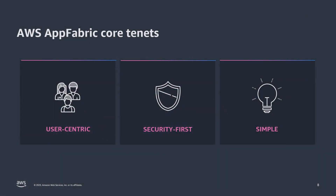Enriching that context with customer data is going to be really important. So let's talk about how we protect customer data privacy when we do that within these applications. How do we take data flowing from SaaS apps into AppFabric and then to the AppFabric AI layer? What privacy controls do we have in place to ensure that customer data isn't compromised?